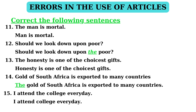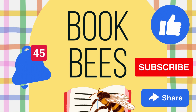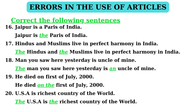In sentence 15: 'I attend the college every day.' — In this statement, 'the' is to be removed. The correct statement is: 'I attend college every day.' Sentence 16: 'Jaipur is a Paris of India.' — It is an incorrect statement, where indefinite article 'a' is to be replaced with definite article 'the'. The correct statement is: 'Jaipur is the Paris of India.'